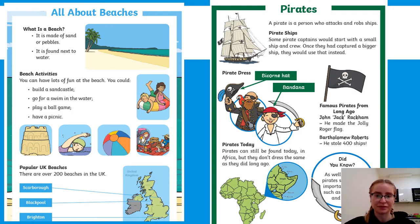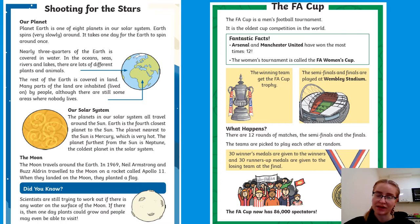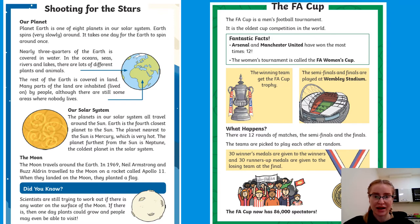There's a part at the bottom that says 'Did You Know' with a fun fact - that's quite common in a fact file. Here are two more fact files. I'm not going to read them in detail, just take you through the features. This one on the left is all about the solar system - the title is 'Shooting for the Stars' and it also has a 'Did You Know' fun fact at the bottom. It's bright and colourful with pictures. The last one is about the FA Cup - a men's football tournament - with pictures of a stadium, a trophy, and spectators.